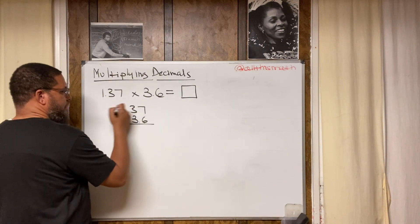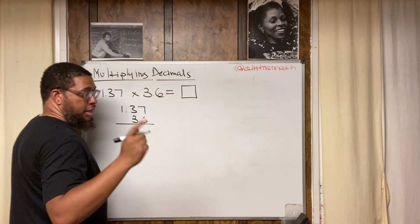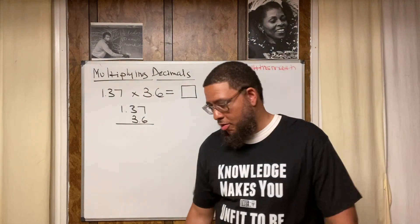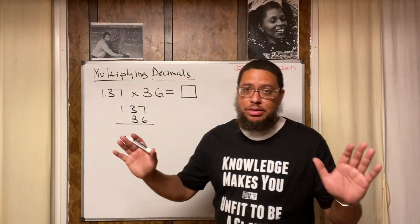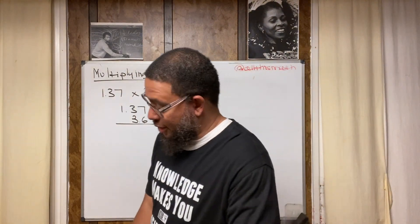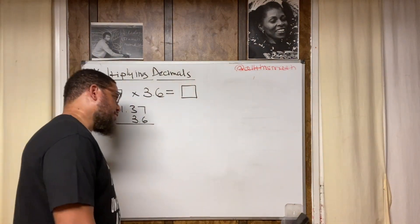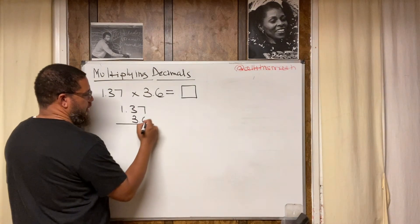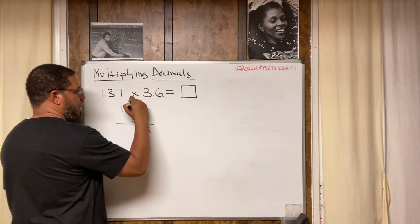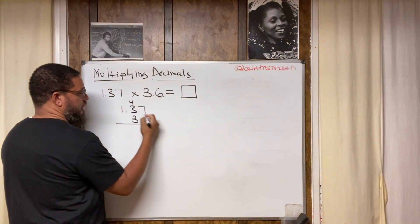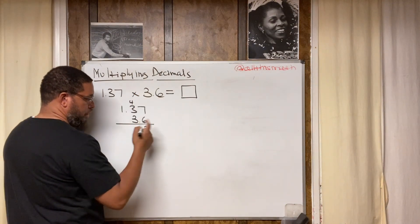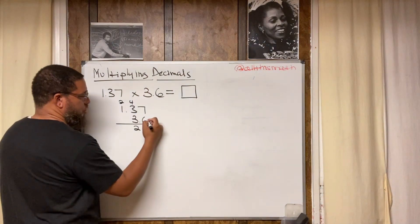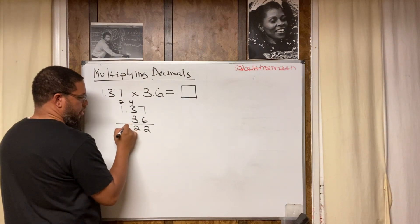I'm going to take the 6 and multiply by everything up top, then take the 3 and multiply by everything up top. First, 6 times 7 — and parents, make sure you have your multiplication facts memorized, and make sure your children have them memorized too. Six times 7 is 42, so I write the 2 under the 6 and carry the 4. Then 6 times 3 is 18, plus 4 is 22 — write the 2 and carry the 2. Then 6 times 1 is 6, plus 2 is 8. So the first partial product is 822.